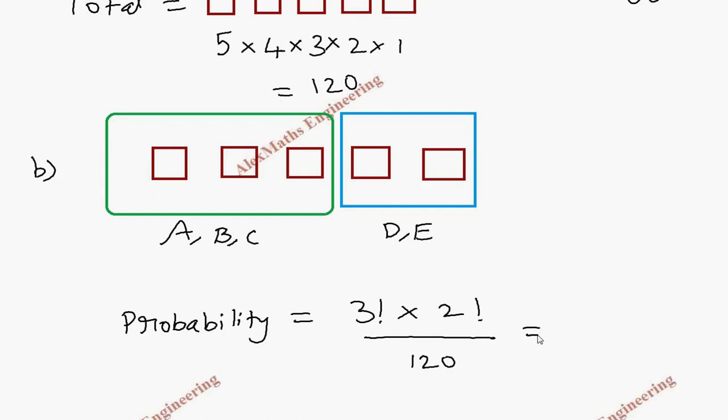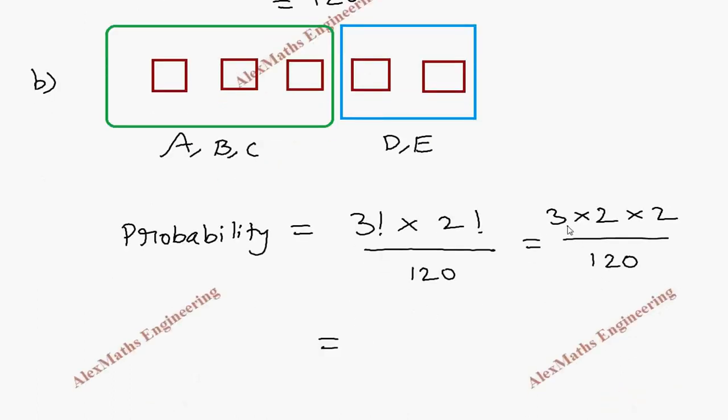So 3 factorial is 3 × 2, which is 6. 2 factorial is 2 × 1, which is 2, divided by 120. And when we multiply the numerator, 3 is 6, 6 is 12. So it is 12/120. After simplification it is 1/10.